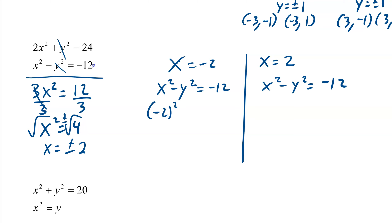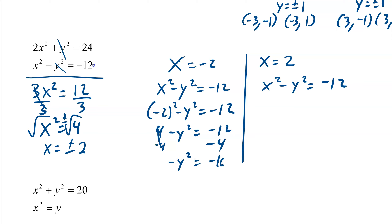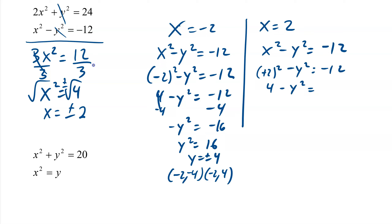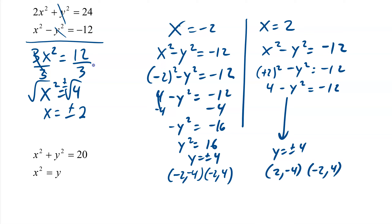For x equals negative 2: negative 2 squared minus y squared equals negative 12, so 4 minus y squared equals negative 12. Subtract 4: negative y squared equals negative 16, so y squared equals 16. Divide both sides by negative 1: y equals plus or minus 4. So our solutions are negative 2 comma 4, and negative 2 comma negative 4. For x equals positive 2, it's the same exact setup, so y equals plus or minus 4 as well. There's a lot of symmetry here because of the shapes — hyperbolas and circles are very symmetric. There are your four solutions.